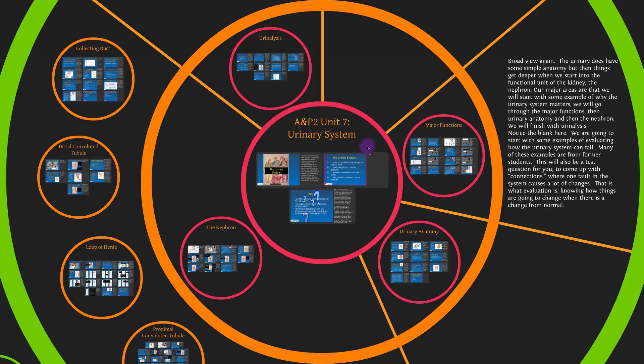From a broad view, the urinary system does have some simple anatomy, but things get deeper when we start into the functional unit of the kidney — the nephron — where things get pretty complex. Our major areas are: why the urinary system matters, major functions, urinary anatomy, the nephron, and we'll finish with urinalysis.